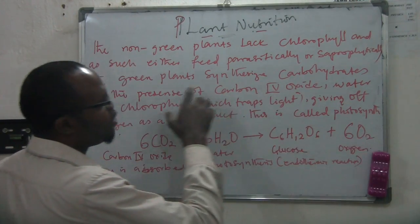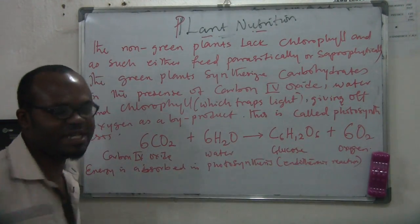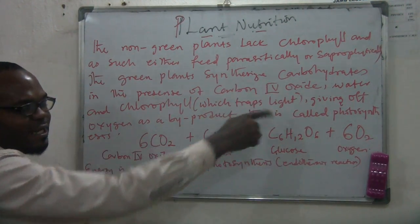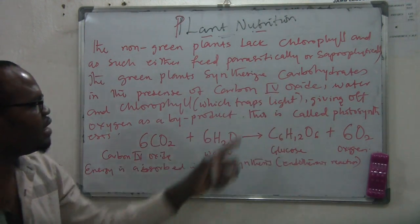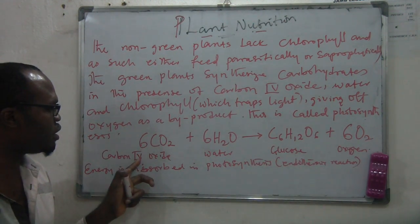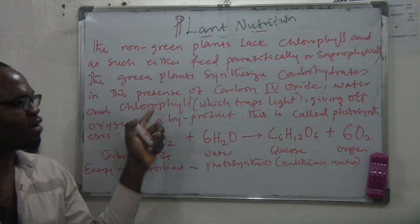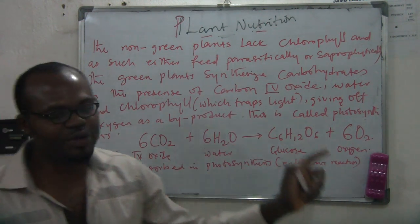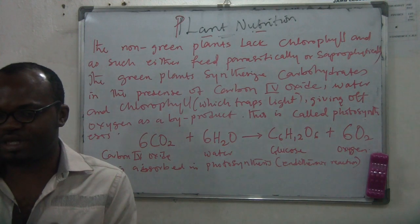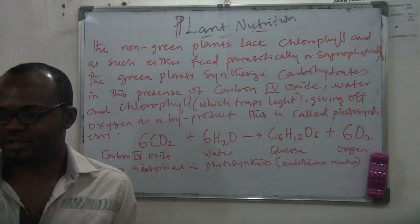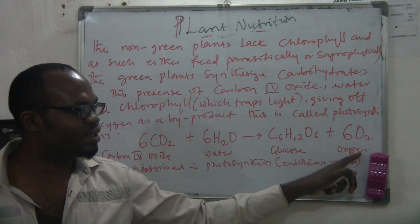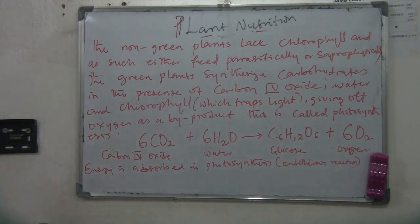Photosynthesis is the process by which plants synthesize carbohydrates. These carbohydrates, also known as glucose, are what they need. For photosynthesis to happen, you need carbon dioxide, water, light, and chlorophyll. The byproduct of photosynthesis is oxygen — it is produced but it is not the major product.